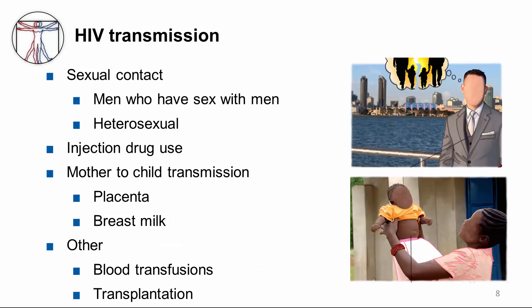How is HIV transmitted? HIV is primarily transmitted by unprotected anal or vaginal sex. Overall, HIV is transmitted via sexual contact with transfer of infected blood. This mechanism accounts for the risk factors outlined on this slide. Perinatal transmission from mother to child also occurs — via the placenta at birth or through breast milk. HIV transmission is very similar to hepatitis B transmission, except that HIV is much less efficiently transmitted than hepatitis B. In other words, hepatitis B is much easier to get.